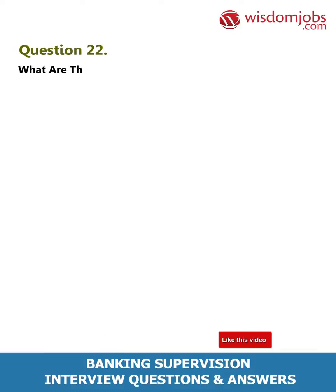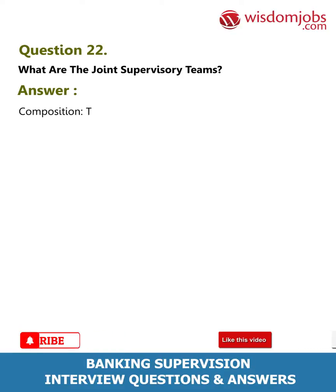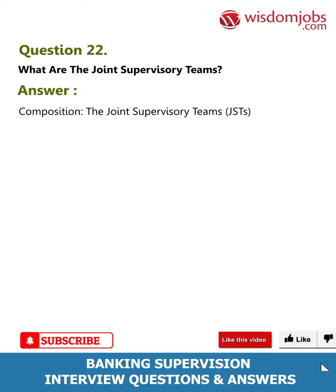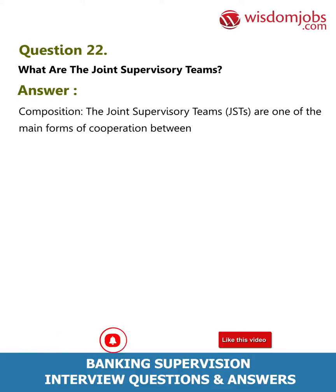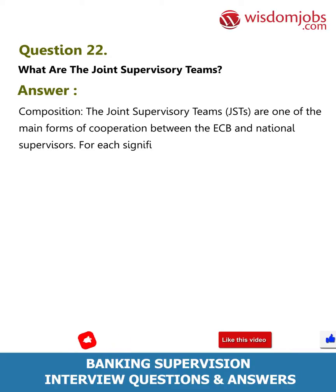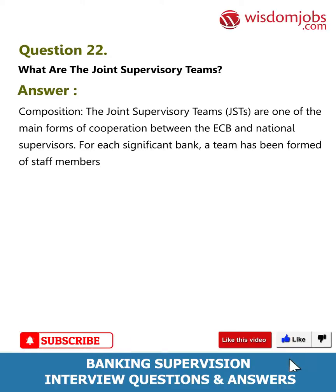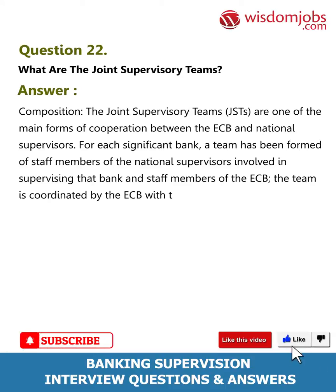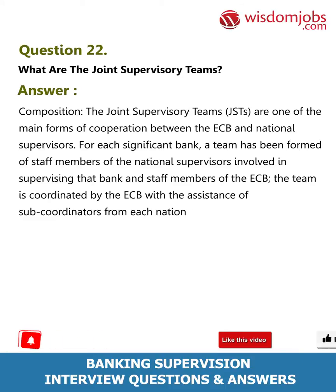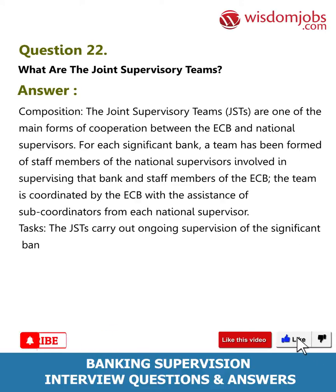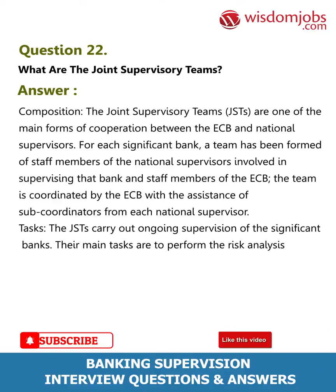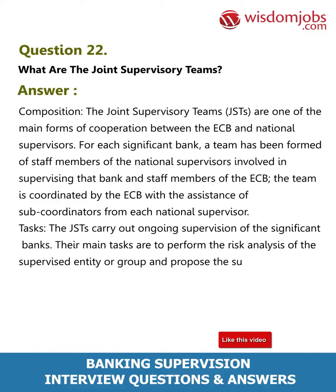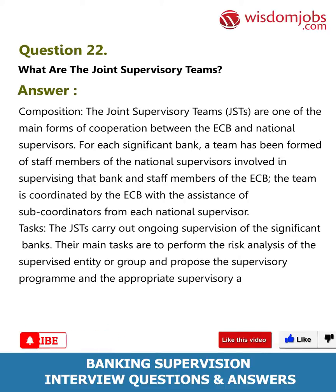Question 22: What are the joint supervisory teams? Answer: The joint supervisory teams (JSTs) are one of the main forms of cooperation between the ECB and national supervisors. For each significant bank, a team is formed of staff from the relevant national supervisors and from the ECB, coordinated by the ECB with assistance from sub-coordinators from each national supervisor. Their main tasks are to perform risk analysis of the supervised entity and propose the supervisory program and appropriate supervisory actions.